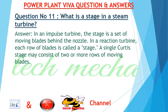Question number 11: What is a stage in a steam turbine? In an impulse turbine, the stage is a set of moving blades behind the nozzle. In a reaction turbine, each row of blades is called a stage. A single Curtis stage may consist of two or more rows of moving blades.